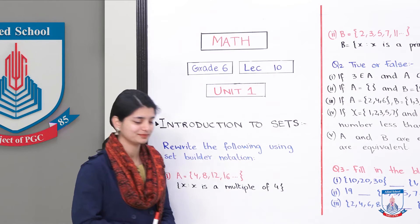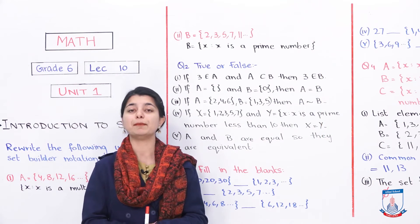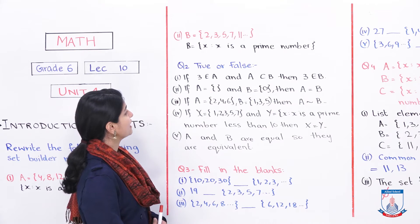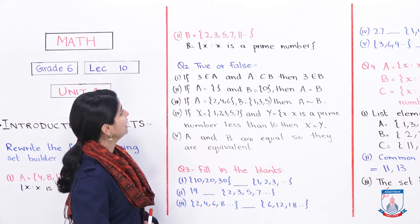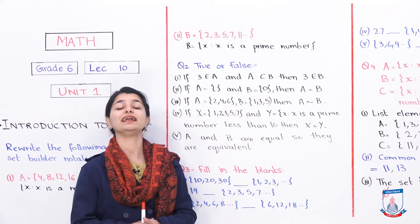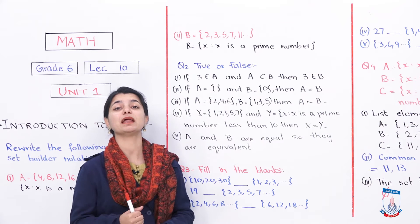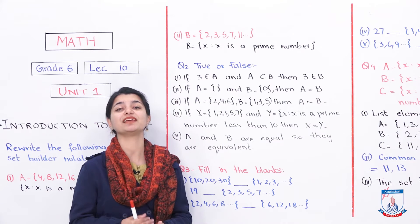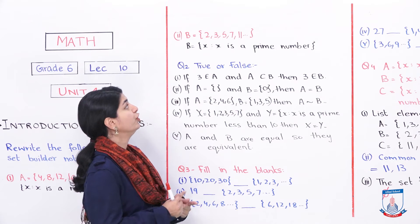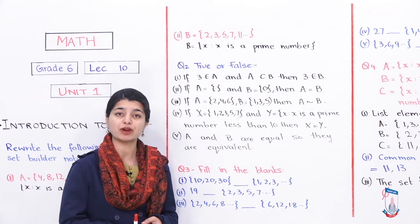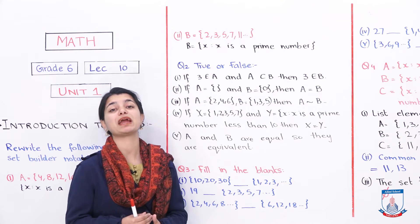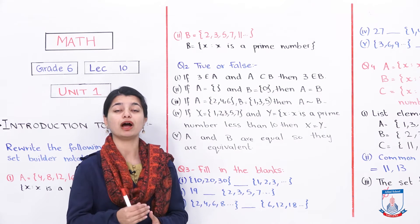Now let's look at the second part. B equals 2, 3, 5, 7, 11. First identify what the numbers are and what the relationship is. These are all prime numbers. 2 is a prime number, 3 is a prime number, 5 is a prime number — all of these are prime numbers. So you write the set builder notation accordingly with the rule that X is a prime number.